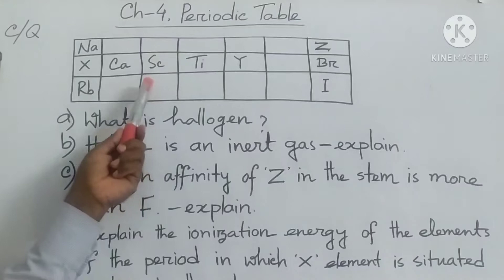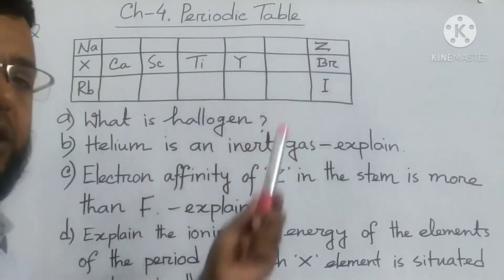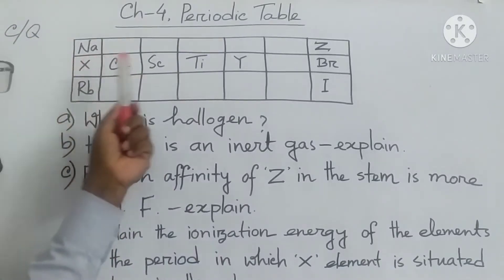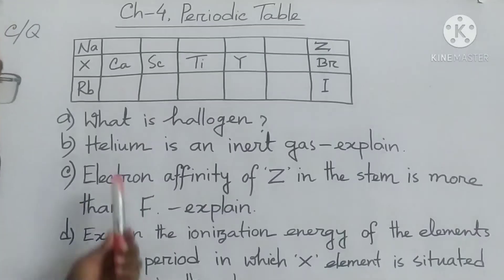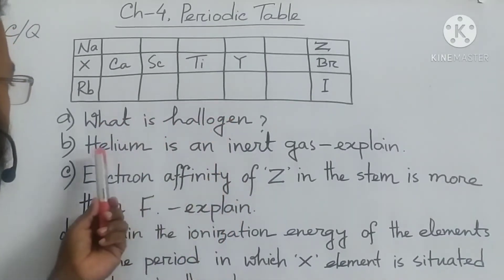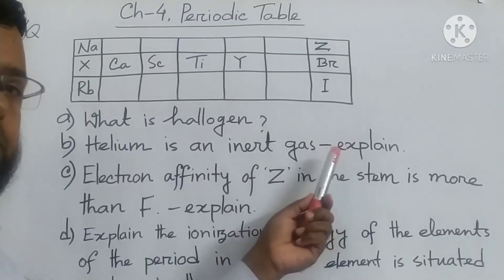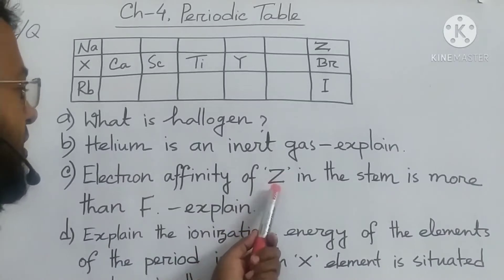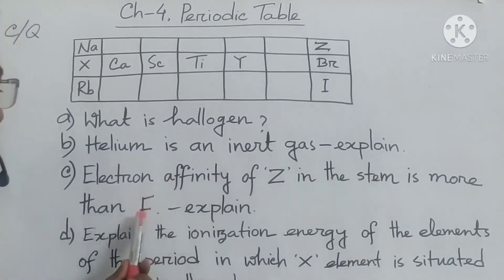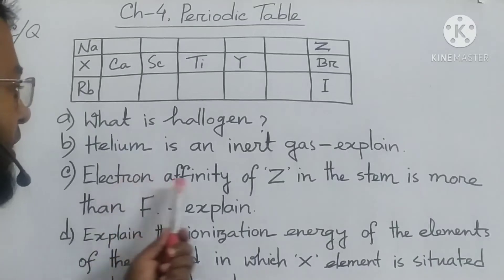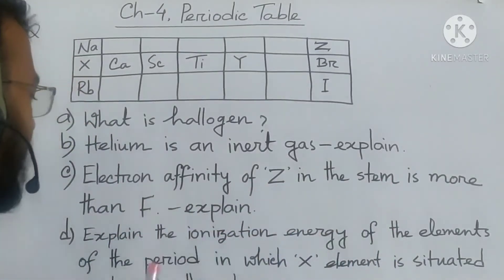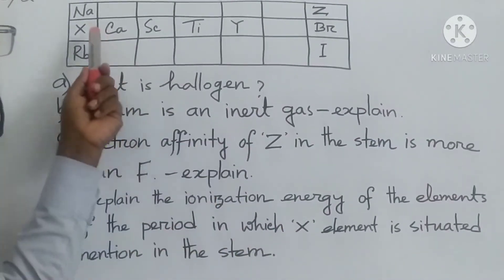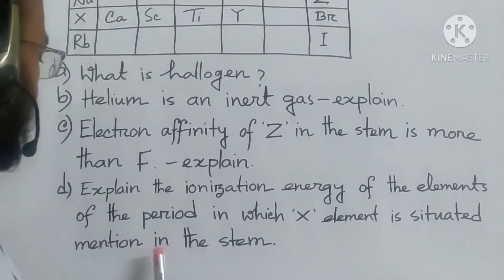Here I have mentioned elements A, X, Y, and Z. First, we have to identify what those elements are. Then we have to answer the questions: first, what is halogen; second, helium is an inert gas — we have to explain; third, we have to explain why the electron affinity of Z element is more than fluorine; and fourth, we have to explain the ionization energy of the elements of the period in which X element is situated.